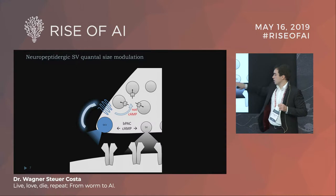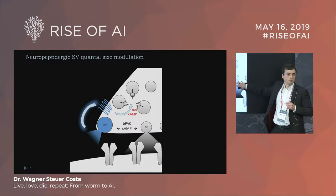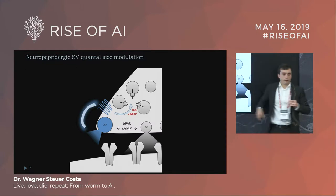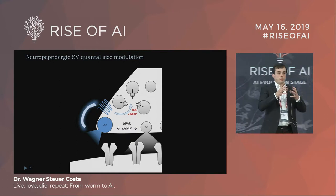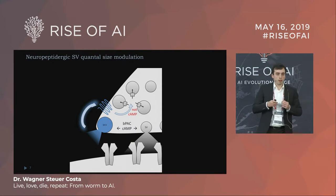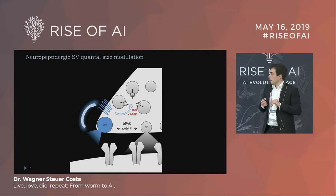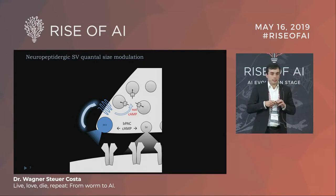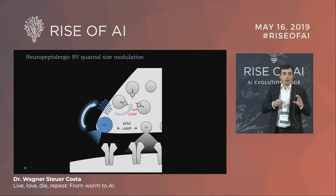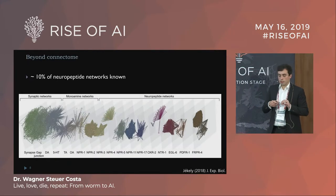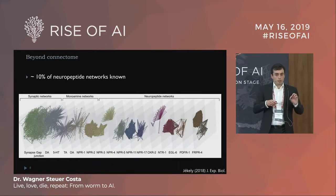In short, what happened with optogenetic activation was that we increased both the probability of release and the information content within single synaptic vesicles. This is interesting because it shows we can modulate the activity of neurons over time, and it brings us to the topic of modulators and connectome connectivity.